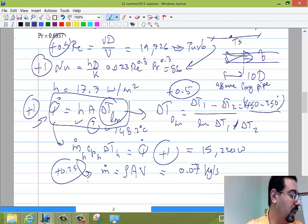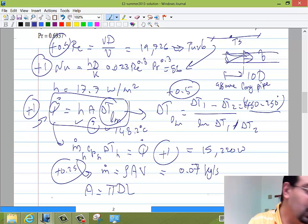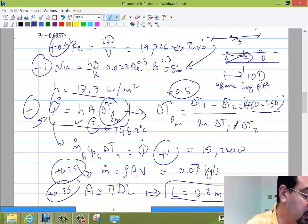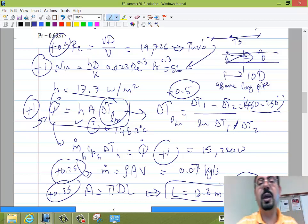Now the only thing that's missing is the area. We get the area and it's πDL. And from that, so this equation, the area is πDL, that's worth 0.25. And from that you get the length as 12.3 meters. And that answer is worth 0.5. So if you screw up the answer for whatever reason, you just lose 0.5. You don't lose anything else. If you have the equation correctly and you just get the answer wrong because you screwed up the Nusselt number at the beginning or the M dot was wrong or whatever, you lose only 10%. Question about this?